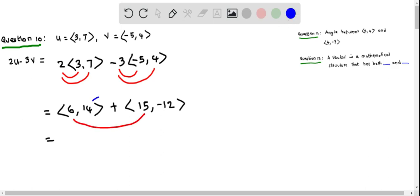I am sorry, 15. And 14 should be added with -12. So 6 plus 15 is 21, and 14 minus 12 is 2. This vector, 2u - 3v, is <21, 2> in component form.